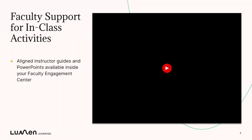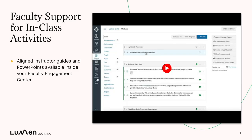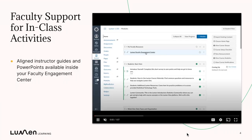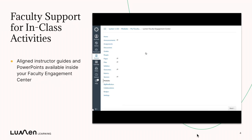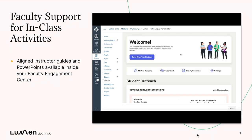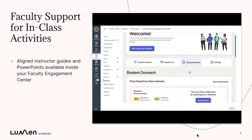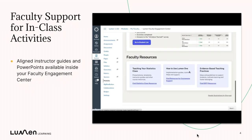These materials to support active learning are located inside your faculty engagement center. As you've seen before, your faculty engagement center is part of your Lumen One course contents. In this video, you'll see we're jumping into the engagement center and then I'm going to immediately click on faculty resources, which is at the bottom of the page.